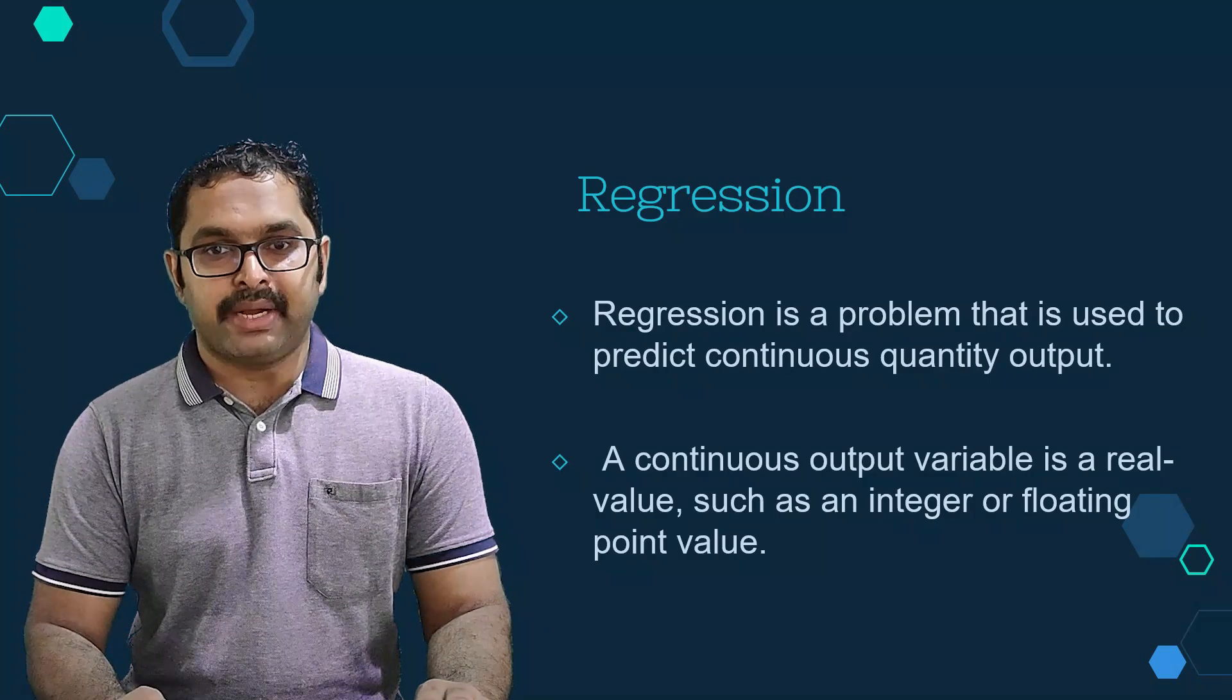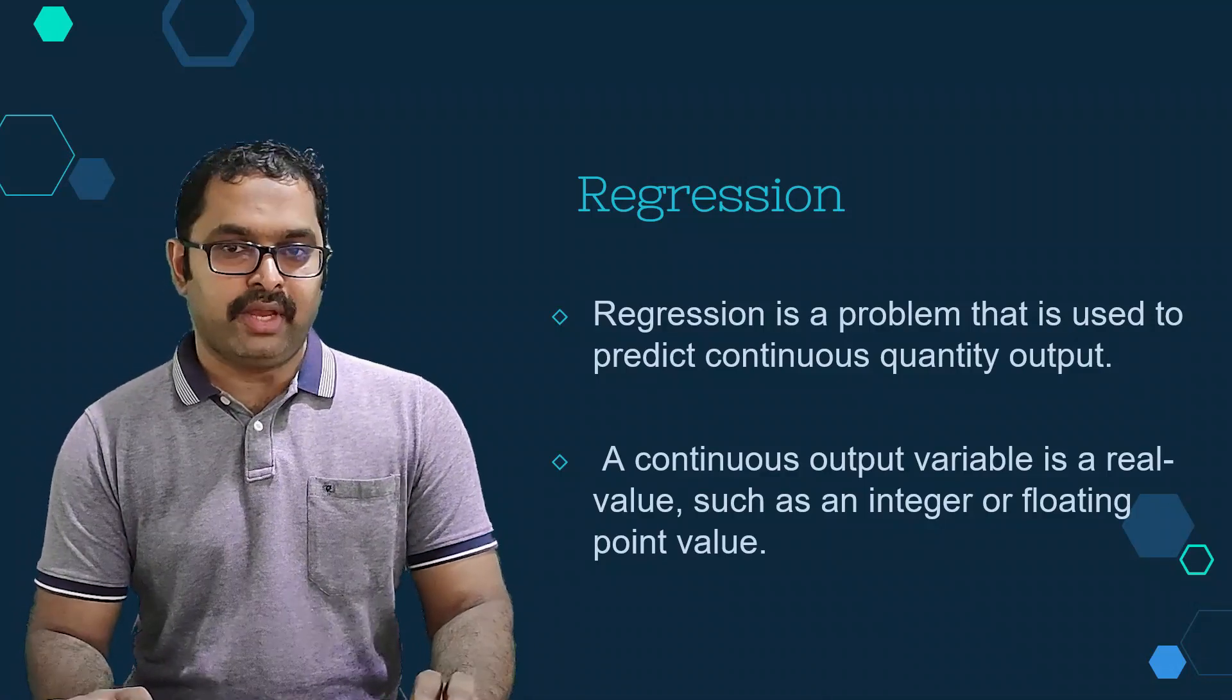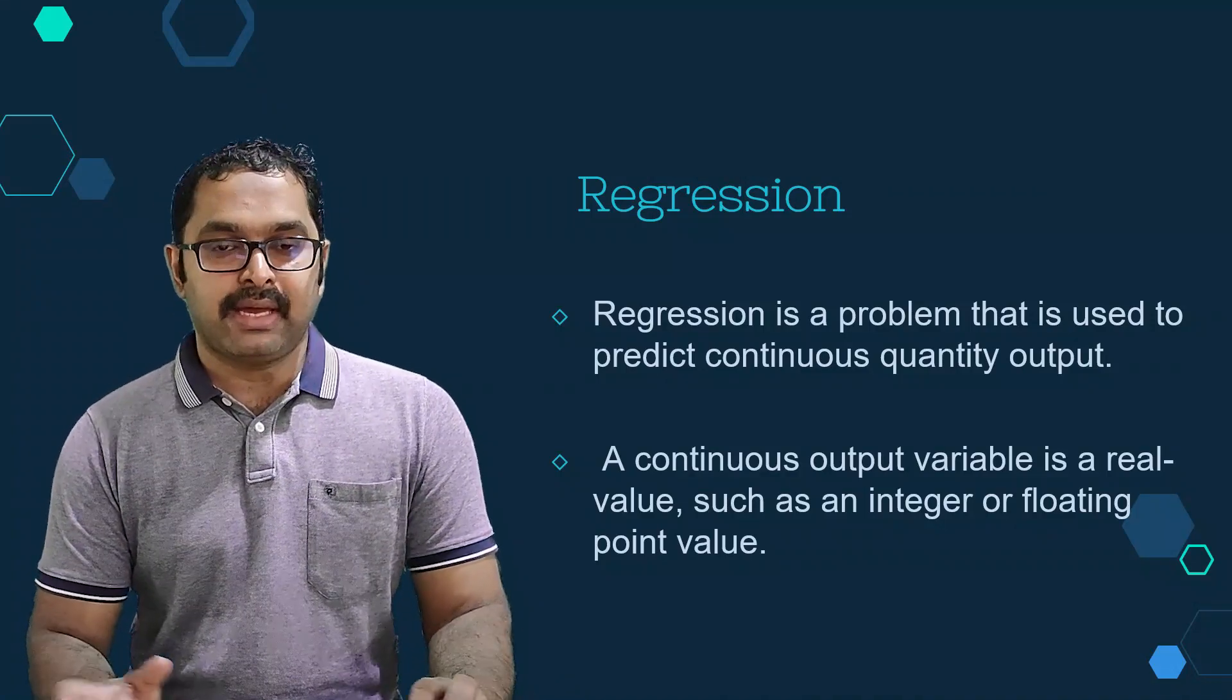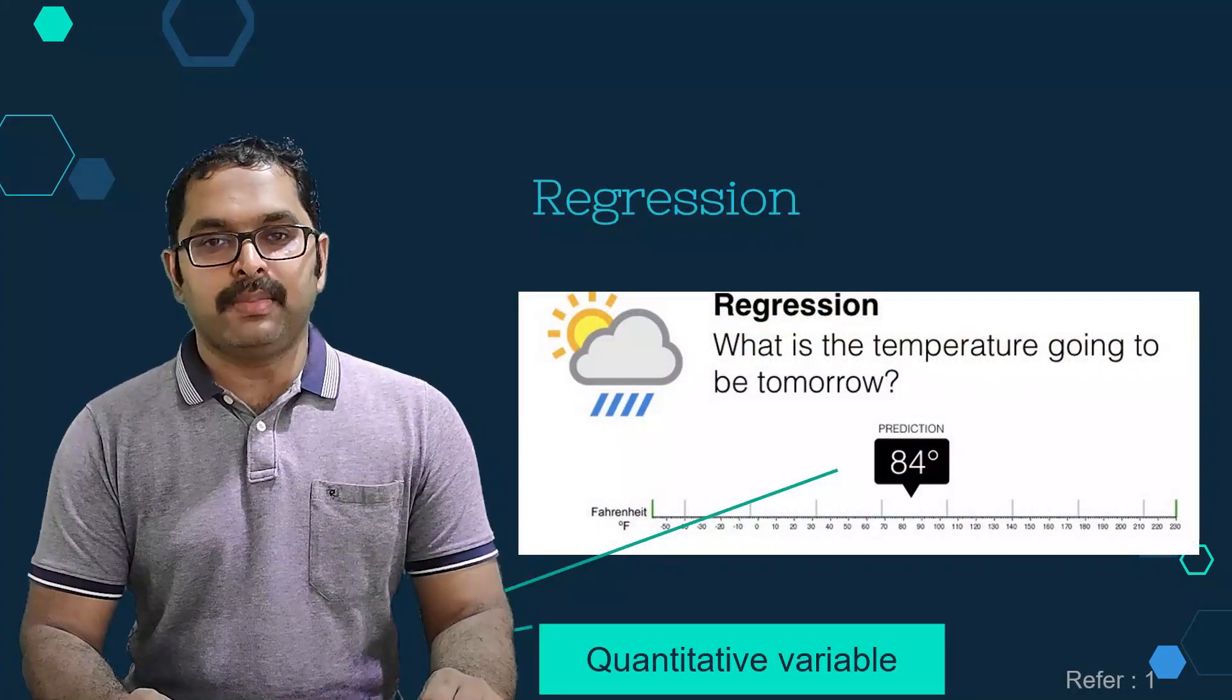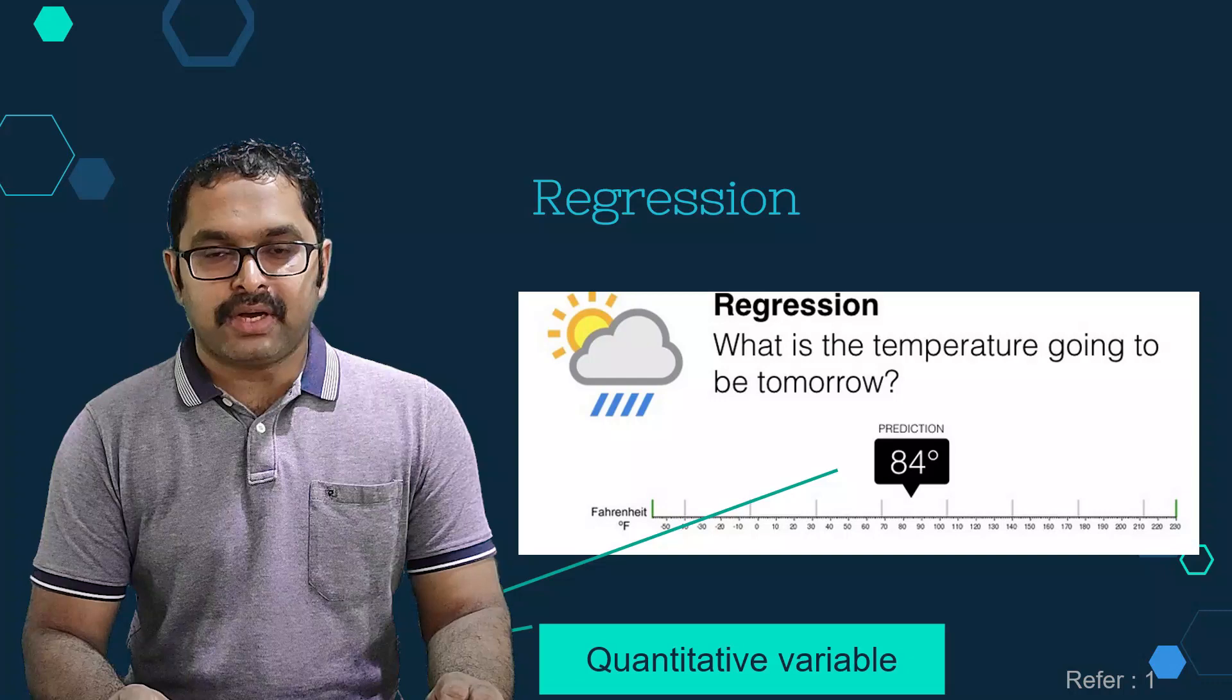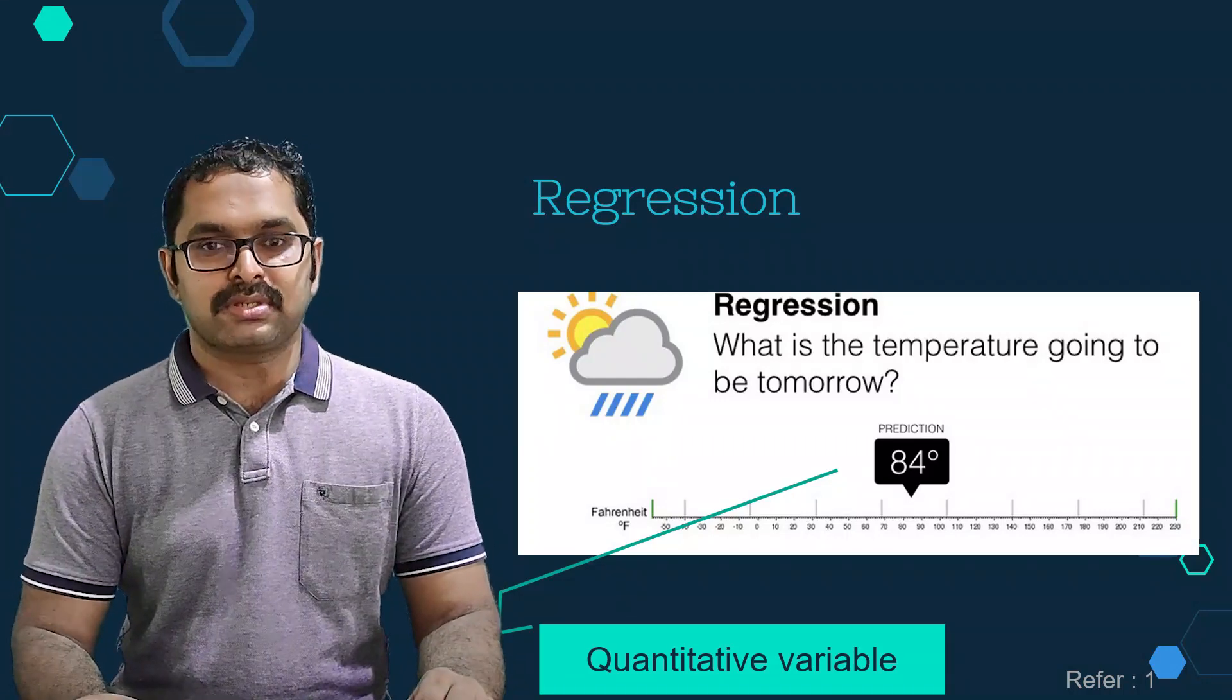Regression algorithms predict a continuous value based on the input variables such as weight, height, temperature, etc. The main goal of regression problems is to estimate a mapping function based on the input and output variables.